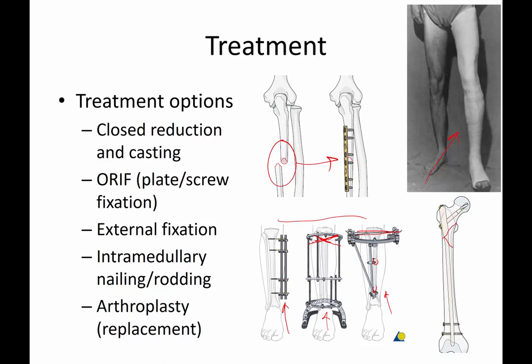Intramedullary nailing is a device where you place essentially a rod inside the bone. Here the red lines represent the fracture, and you can see this rod inside the femur with some screws — one up in the head and two down in the distal femur, called interlocking screws. The implant is intramedullary, in contrast with plate and screws which sit on the outside or cortical side of the bone.